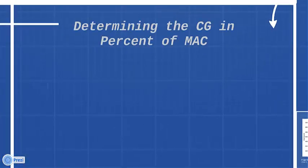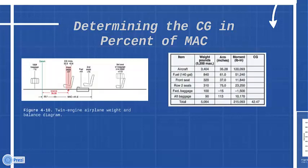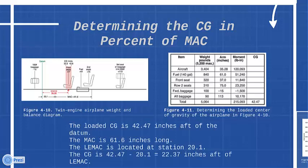Determining the CG in percent of MAC: Refer to Figures 4-10 and 4-11. The loaded CG is 42.47 inches aft of the datum. The MAC is 61.6 inches long. The LEMAC is located at station 20.1. The CG is 42.47 minus 20.1 equals 22.37 inches aft of the LEMAC.